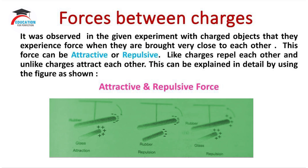The first stage is about a rubber rod and a glass rod. If a rubber rod is negatively charged and the glass rod is positively charged, and when they are brought very close to each other, then they will create a kind of force which is called attractive force.